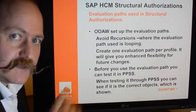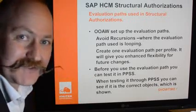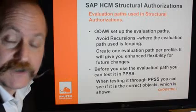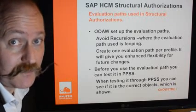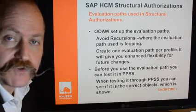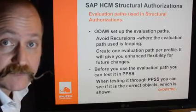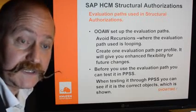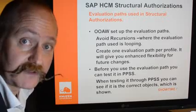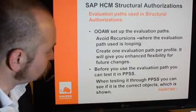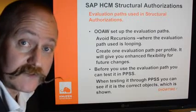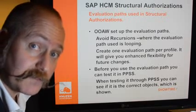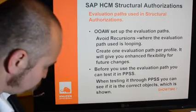The evaluation path is quite essential for the structural authorization. You can set them up in transaction OOAW. When you are setting them up, please avoid recursions — they will mess up the structural authorization. You can also create one evaluation path per structural profile, which makes it transparent and gives you enhanced flexibility for maintaining specific structural profiles without having an impact on others. Before you are using those evaluation paths for your structural profiles, you can test them in the transaction called PPSS to see if they are granting access to those objects you want them to grant access to. Let's have a look at it.